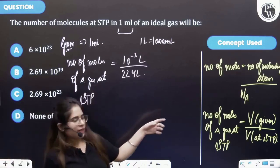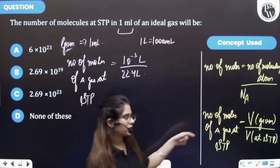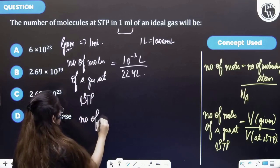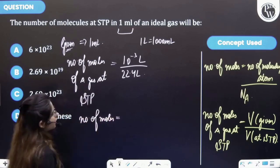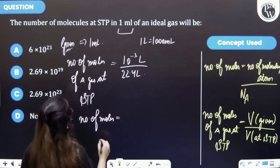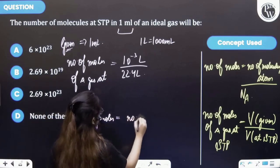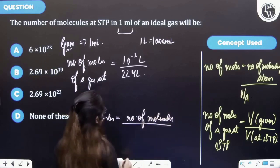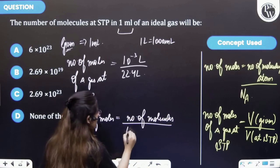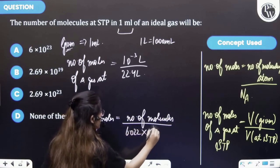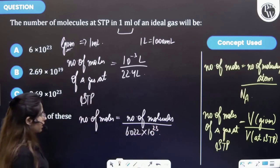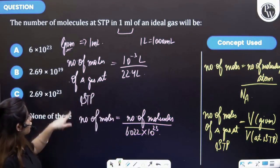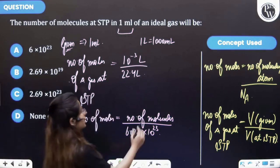Also we know that number of moles is equal to number of molecules divided by Avogadro's number. And so number of moles is equal to number of molecules that we have to find out, divided by Avogadro's number which is equal to 6.022 × 10^23. Now you will observe one thing: that number of molecules is equal to moles. So we can equate these equations.